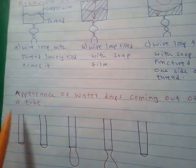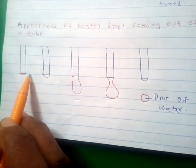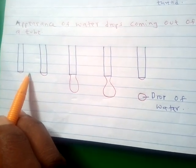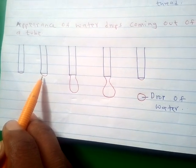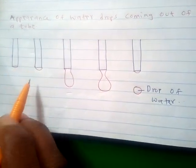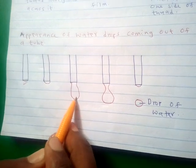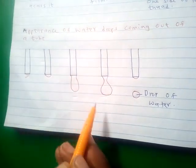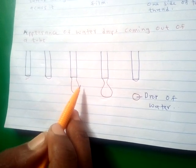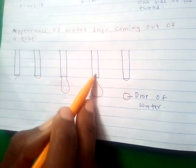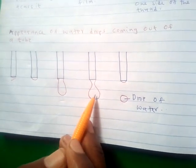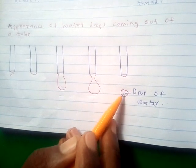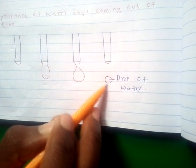Next, we look at the appearance of water drops coming out of a tube. In this experiment, a burette filled with water and fitted with a tap is used. The tap is opened slowly to observe how each drop moves out. Initially, the drop of water grows slowly, and as it grows, the surface near the mouth of the burette behaves like a stretched elastic skin.